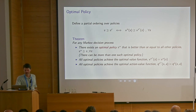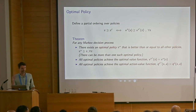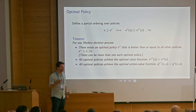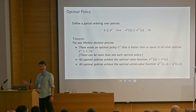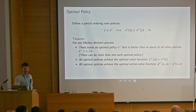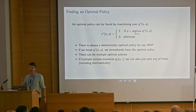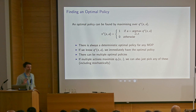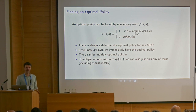We already saw an example of multiple optimal policies in the grid world where going up and left has the same value as going left and up. Now how do we find an optimal policy? One very simple way is to first find the optimal value — that part might be hard — but if you have the optimal values, finding an optimal policy is trivial: you can just take the greedy action with respect to the optimal action values, and this is guaranteed to be an optimal policy. There is always a deterministic optimal policy for finite MDPs. If multiple actions maximize Q-star, we can just pick an action arbitrarily — even stochastically — which is why there is always a deterministic optimal policy.